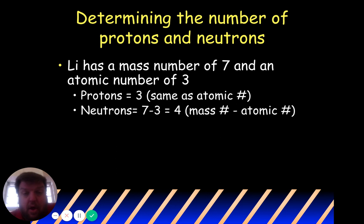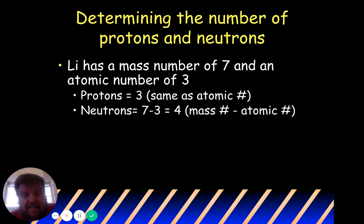You're going to find that the mass numbers on the periodic table are these long decimals — it might be 6.99999. Remember your rounding rules from math: five or higher rounds up, four or lower rounds down. So if it's 3.464, assume the mass number is three. But if it's 3.626, assume the mass number is four.